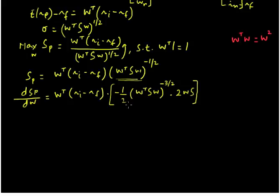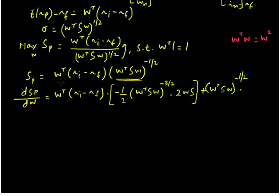Then we close the bracket and add the second part of the product rule: the second function as it is, multiplied by the derivative of the first function. Taking the derivative of W transpose times (Ri minus Rf) with respect to W gives us Ri minus Rf. So we write Ri minus Rf here.